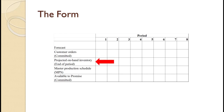Projected on-hand inventory is the inventory at the end of the period. We schedule production as needed to keep this value from going below zero. This is where we schedule the production, and this schedule would then flow into the material requirements planning process. Available to promise is the inventory that has not been committed to any customer. Note that we calculate available to promise after we have finished calculating the Master Production Schedule.